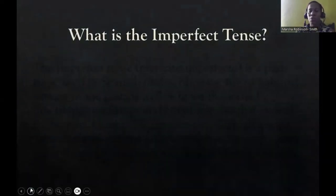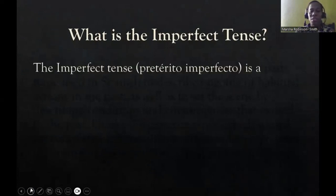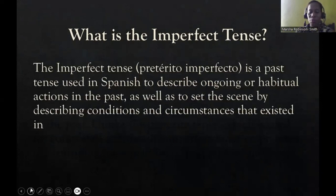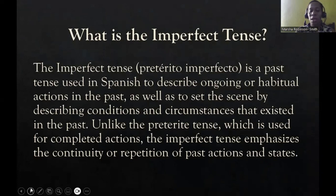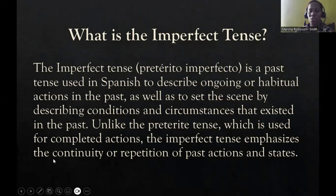First, you need to know what the imperfect tense is. The imperfect tense, or pretérito imperfecto, is a past tense used in Spanish to describe ongoing or habitual actions in the past, as well as to set the scene by describing conditions and circumstances that existed in the past. Unlike the pretérito tense, which is used for completed actions, the imperfect tense emphasizes the continuity or repetition of past actions and states.